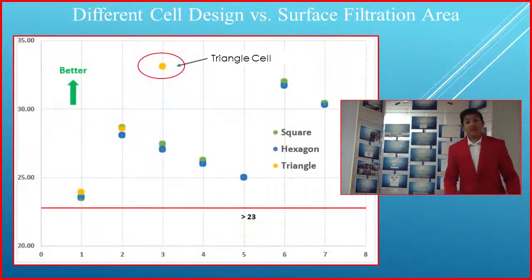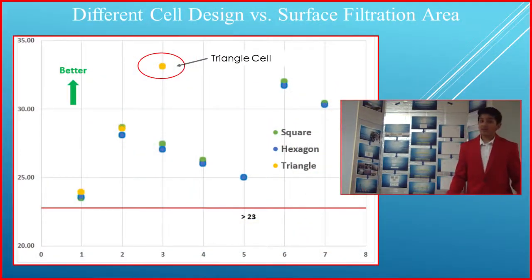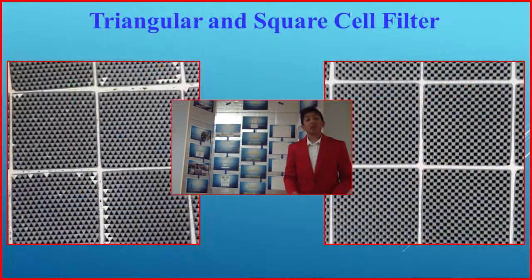Data analysis indicated that the hexagonal cell had the most desirable attributes. However, the triangular cell provided the largest filtration area, with 5% lower back pressure than the corresponding square cell.